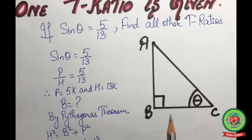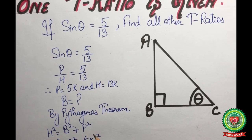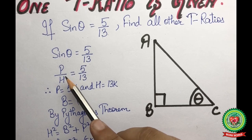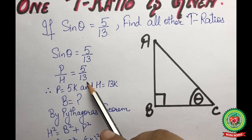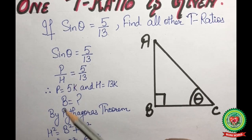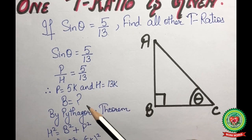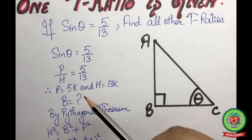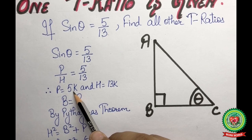We are given that sine theta is equal to 5 upon 13. We know that sine theta is equal to p upon h, so p upon h is equal to 5 upon 13. Since this is a ratio, ratios are always in their simplest form, so we use a variable k with them. We get the value of p as 5k and the value of h as 13k.